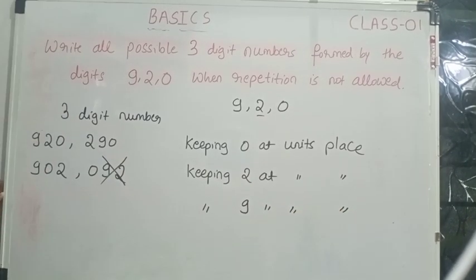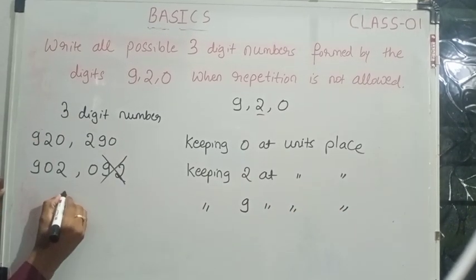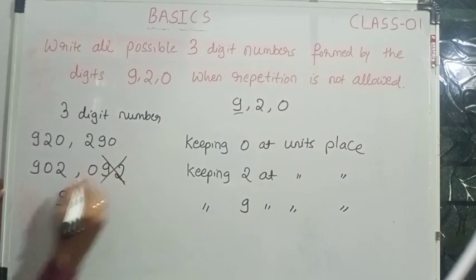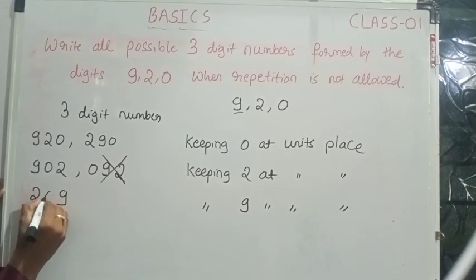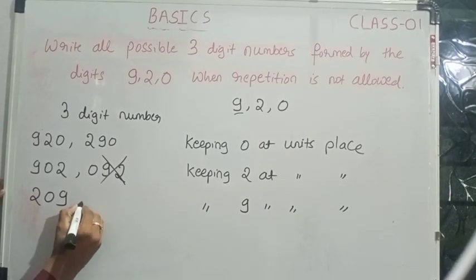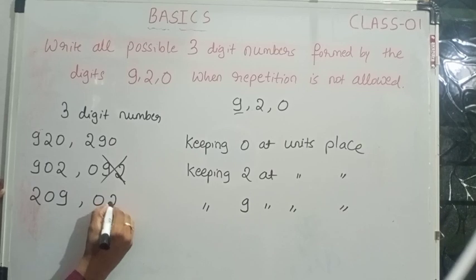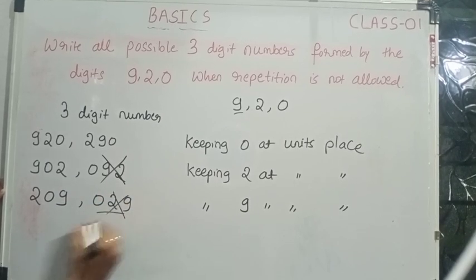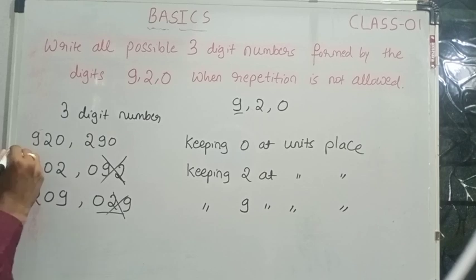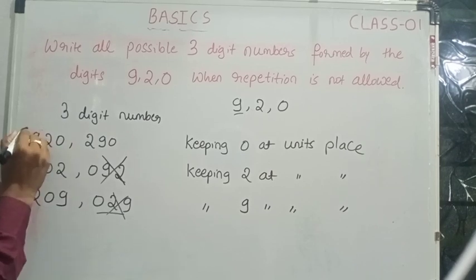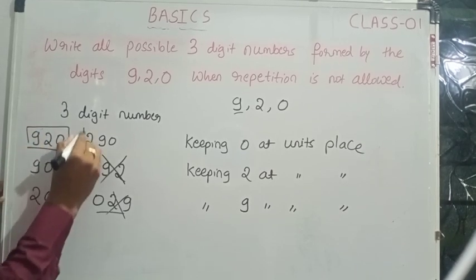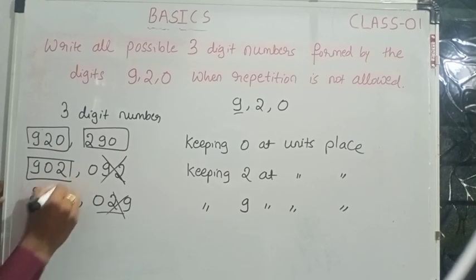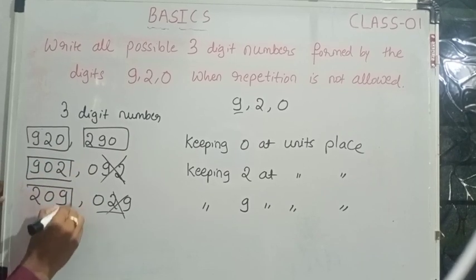Keeping 9 at the unit's place, we can form 209. Note that 029 is not a valid 3-digit number. Therefore, the possible 3-digit numbers when repetition is not allowed are 920, 290, 902, and 209.